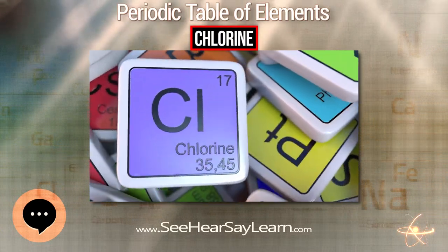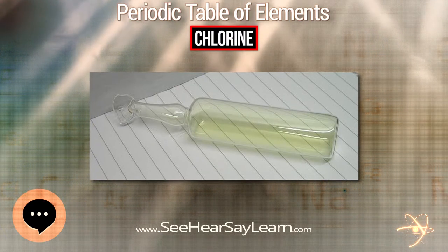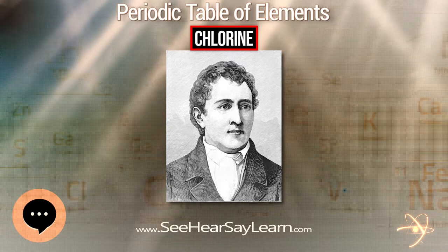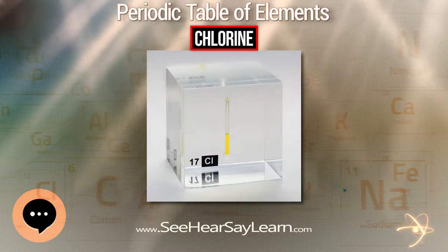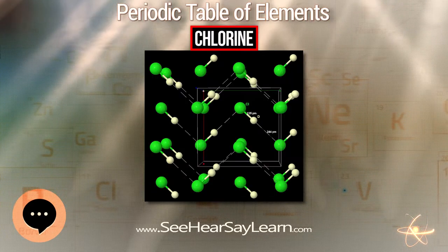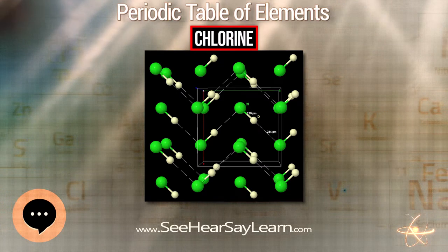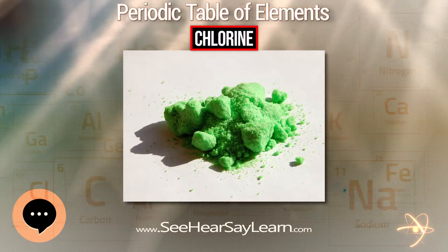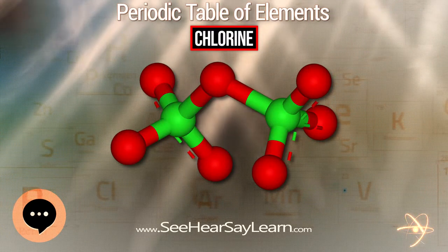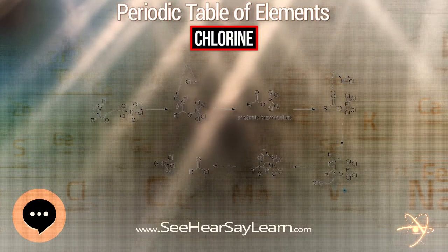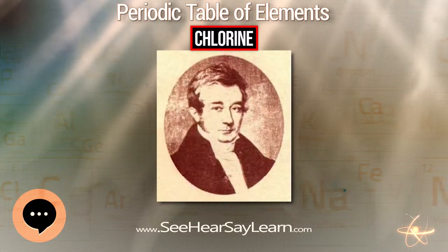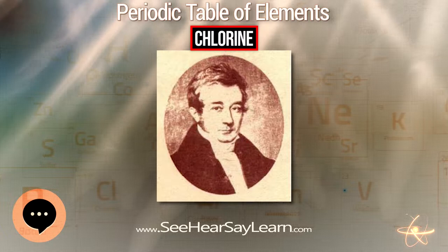Chlorine has two stable isotopes: ³⁵Cl and ³⁷Cl. These are its only two natural isotopes, with ³⁵Cl making up 76% of natural chlorine and ³⁷Cl making up the remaining 24%. Both are synthesized in stars in the oxygen burning and silicon processes. Both have nuclear spin 3/2+, and thus may be used for nuclear magnetic resonance, although the spin magnitude greater than one-half results in non-spherical nuclear charge distribution and thus resonance broadening due to a non-zero nuclear quadrupole moment.